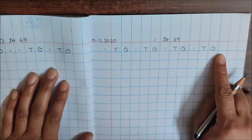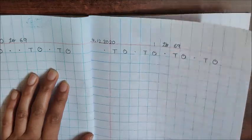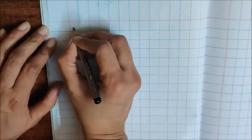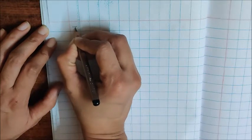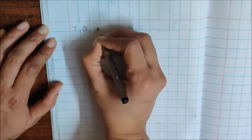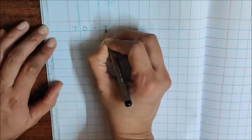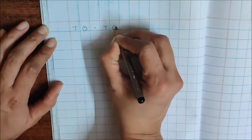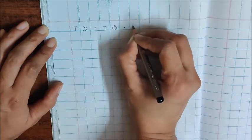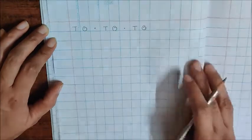Now, turn the page. Write down here T, O, again put a dot. Then write down T, O, dot, T, O. Done children?